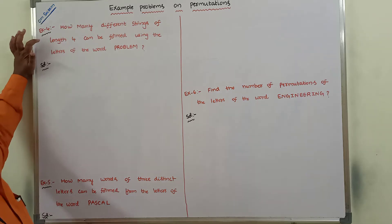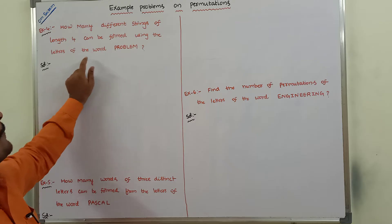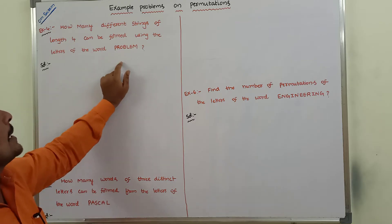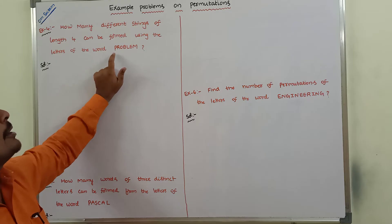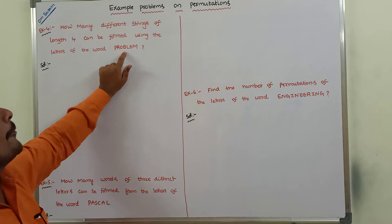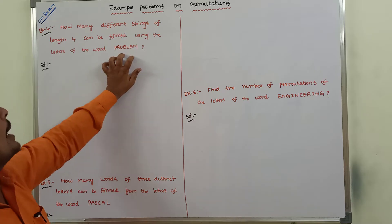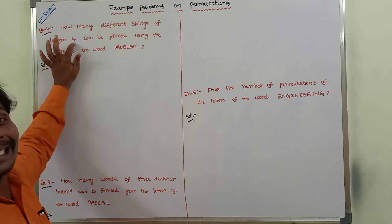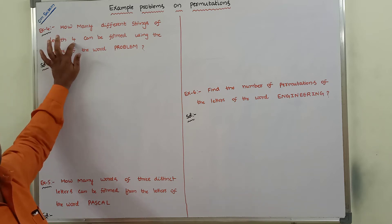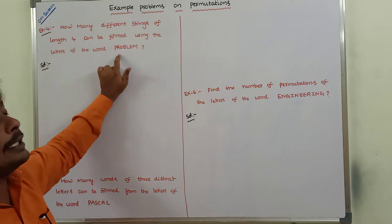Next, we go for the fourth problem. How many different strings of length four can be formed using the letters of the word PROBLEM? The given word contains seven letters. From the seven letters, we are selecting four letters. How many permutations are possible by using four letters from the given word PROBLEM?